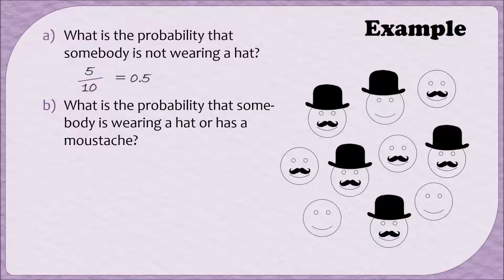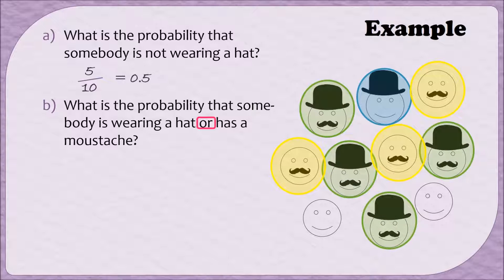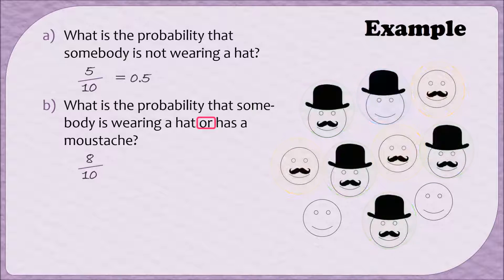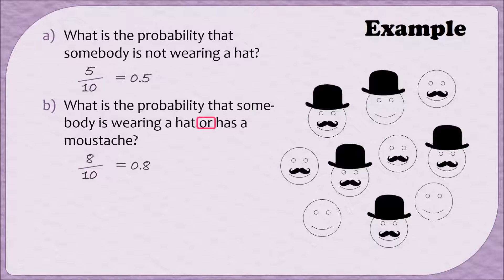Next, what is the probability that somebody is wearing a hat OR has a mustache? In this case, we're interested in 3 different groups of people. We are interested in those who are just wearing a hat but don't have a mustache, those who have a mustache but are not wearing a hat, and those who are wearing a hat and also have a mustache. So when I count up the number from my numerator, I need to include all 3 of these groups. Those who are wearing a hat, those who have a mustache, and those who have both. In this case, that's going to be 8 people out of 10, which is the same as 0.8.